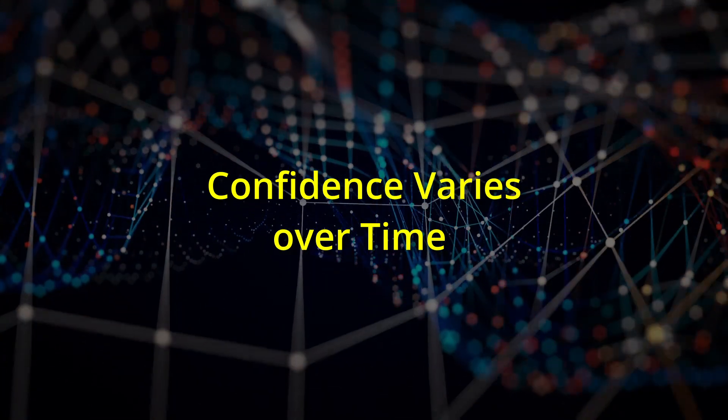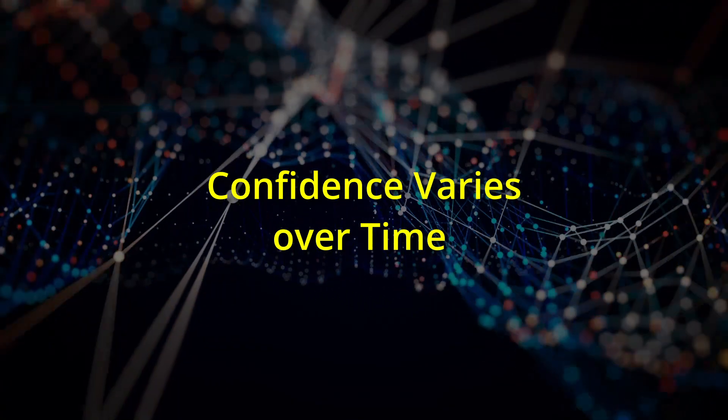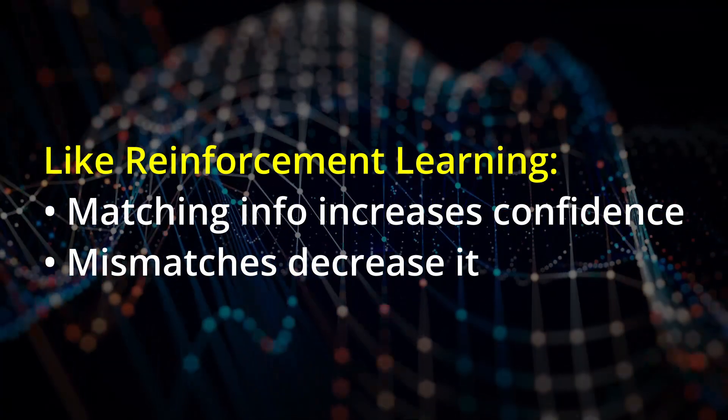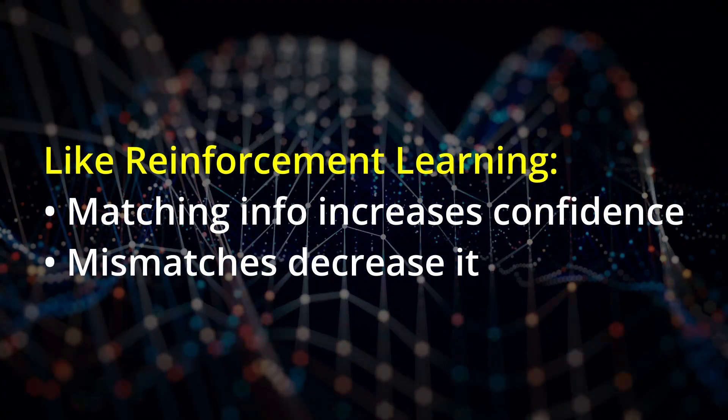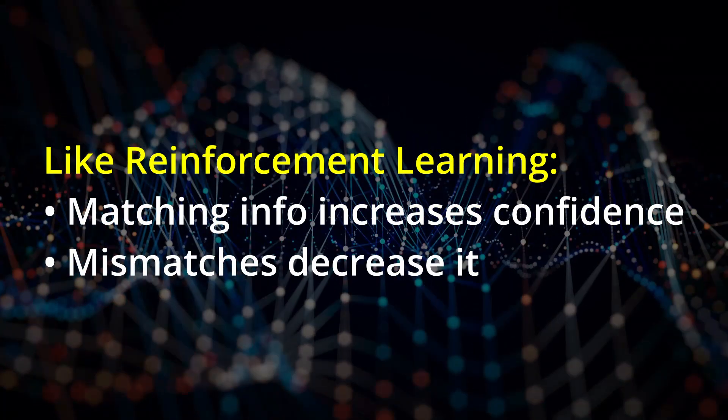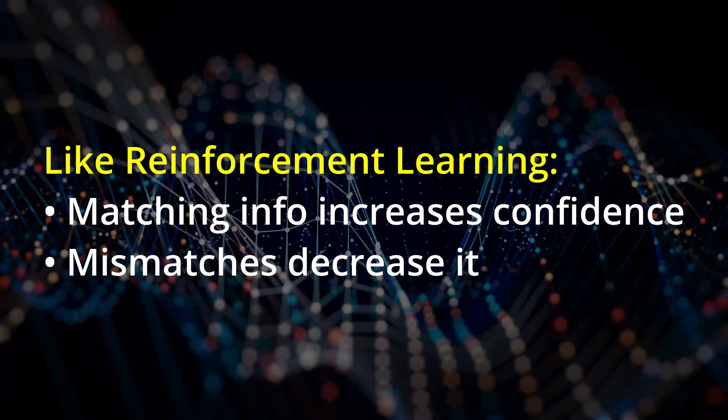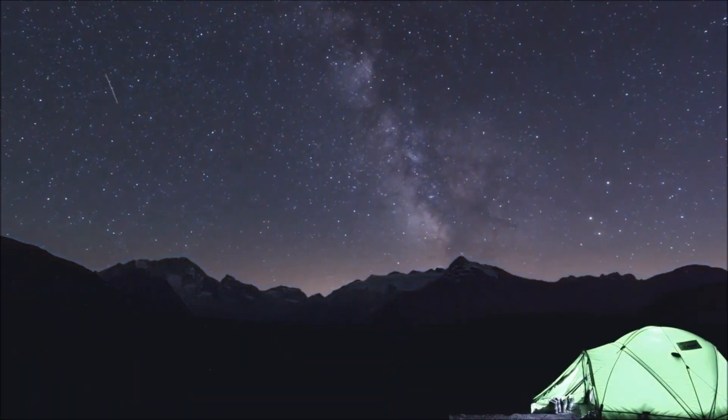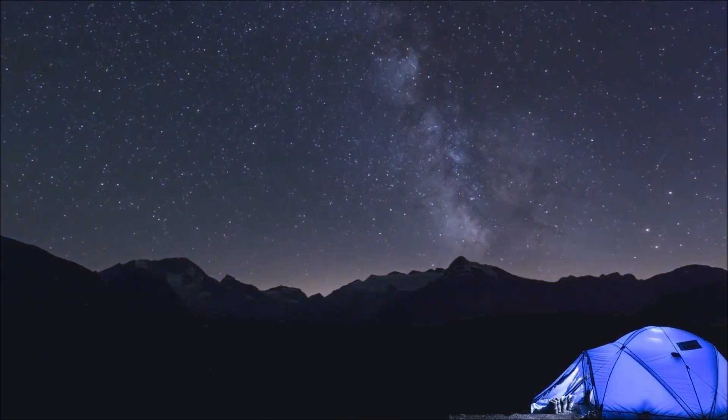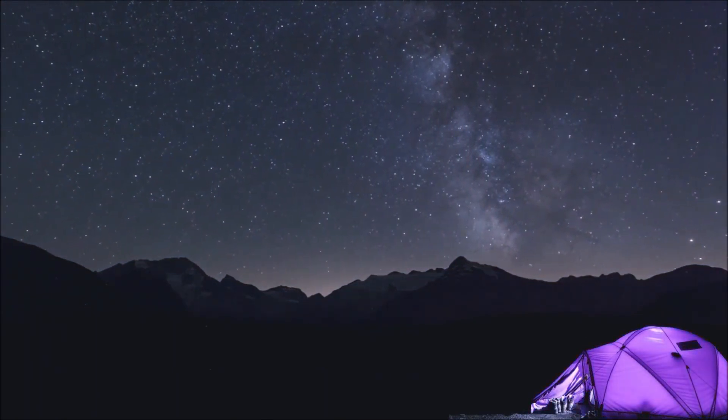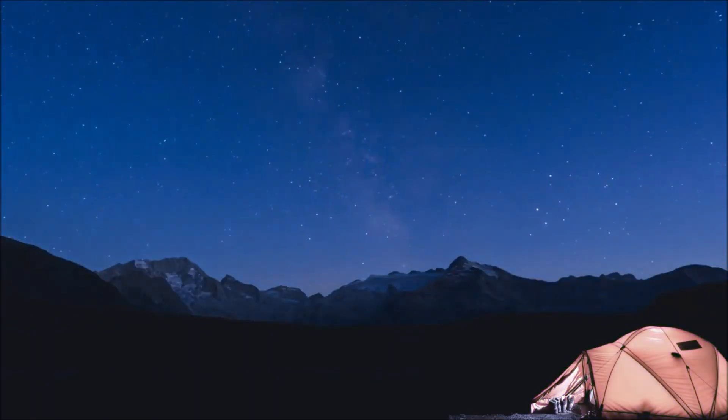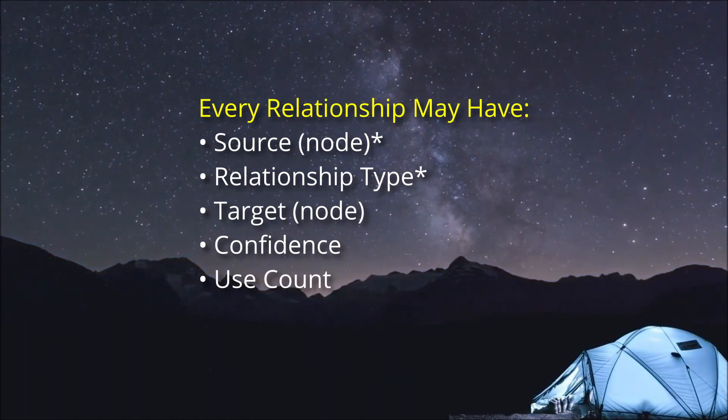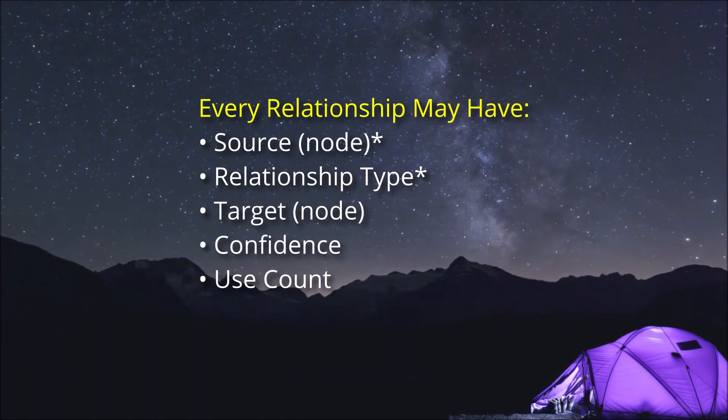Confidence varies over time. After you've created a relationship with a given confidence, if you subsequently receive reinforcing information, the confidence level can increase. And if you receive contradictory information, the confidence level will go down. For your mind to do this, it must also know how many times you've encountered the information in order to know the amount to adjust the confidence value.